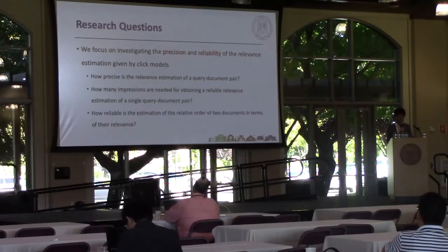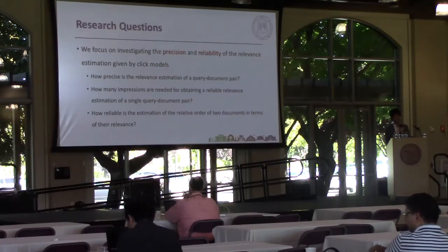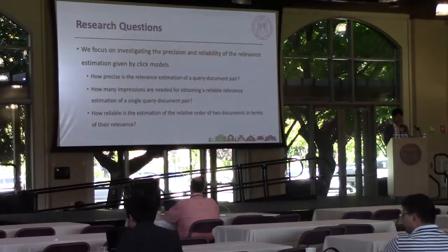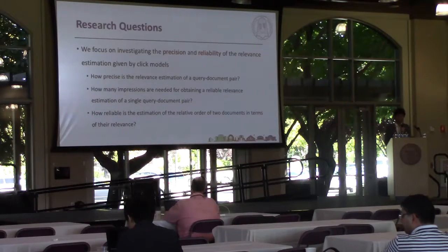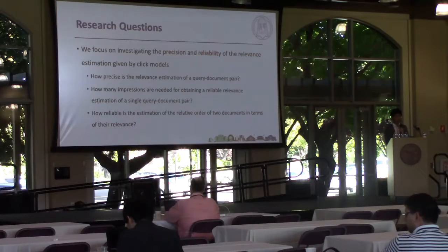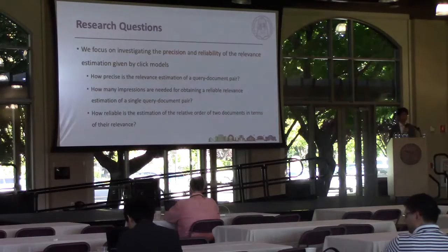So in this study, we focus on investigating the precision and reliability of the relevance estimation given by the click models. We try to address the following questions: first, how precise is the relevance estimation of a query-document pair given by the click model? Second, how many impressions are needed for obtaining a reliable relevance estimation of a single query-document pair? And third, how reliable is the estimation of the relative order of two documents in terms of their relevance?